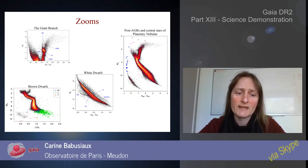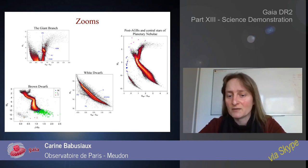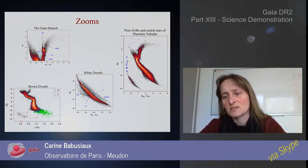So to conclude, Gaia opens a full new area for studies based on HR diagrams for both stellar evolution and stellar population studies.